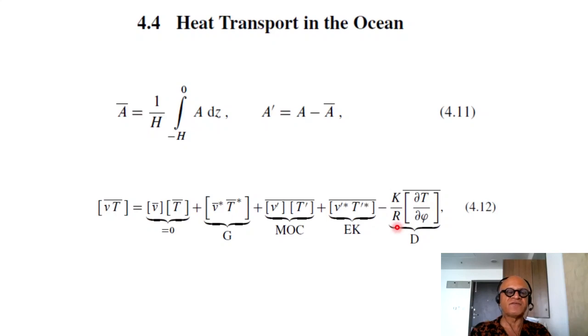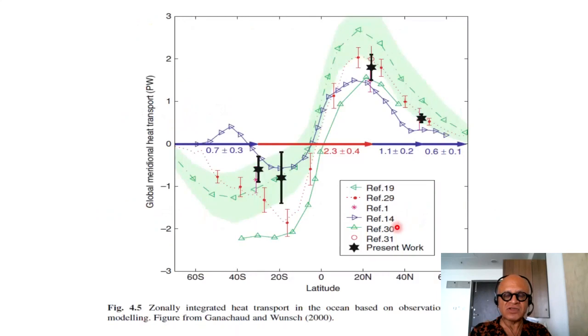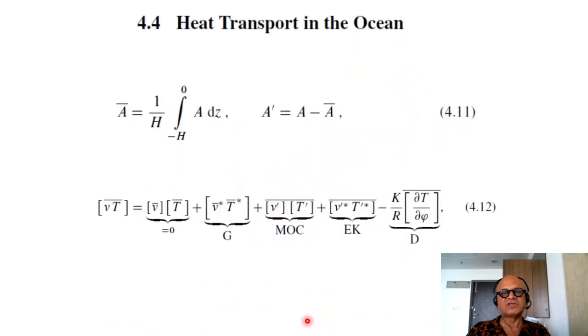And you have, of course, the diffusion term that is related to the meridional temperature gradient with a diffusion coefficient and the radius of the earth for scaling. So obviously looks different and yet quite similar. Looking at the global meridional heat transport in petawatts again, you have multiple estimates here. This is from Ganachaud and Wunsch from 2000.